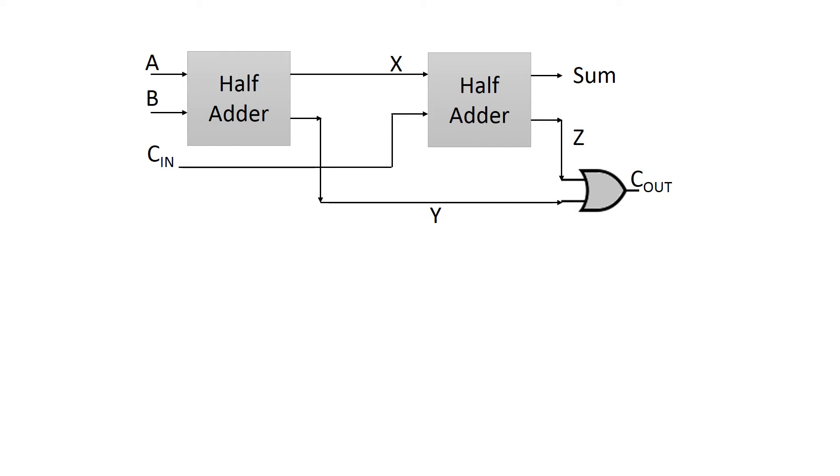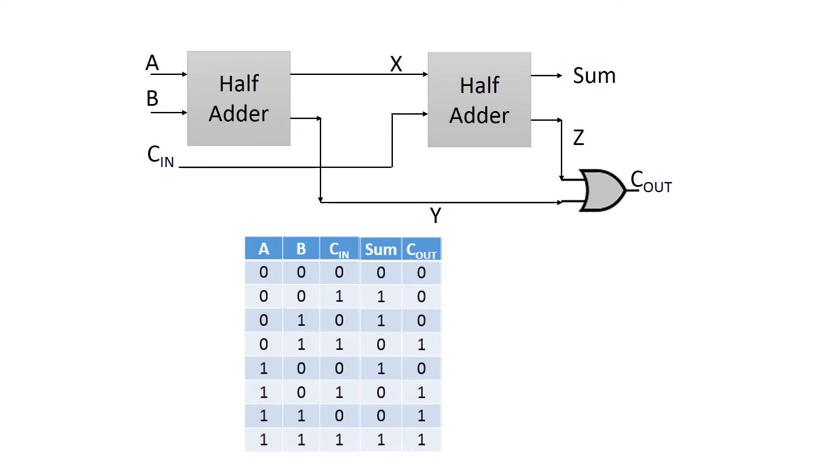A, B, C are the inputs of the full adder. Sum and carry are the outputs of the full adder. There are three internal signals: X, Y and Z.